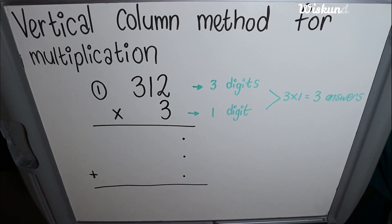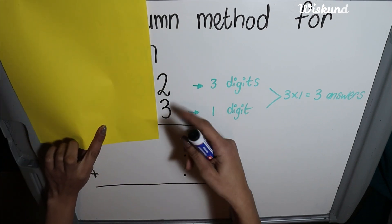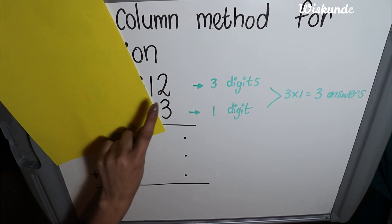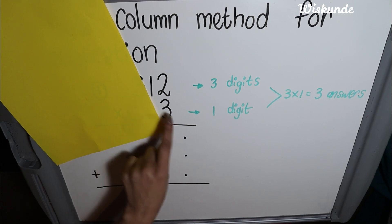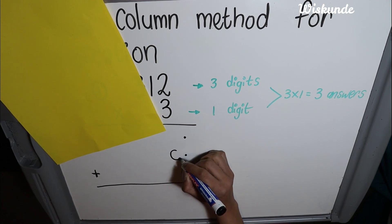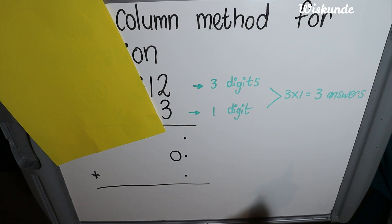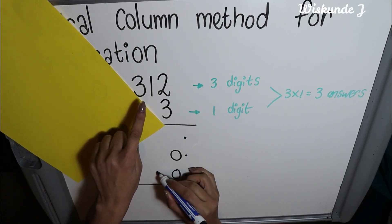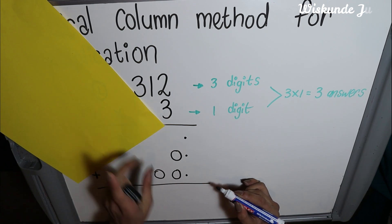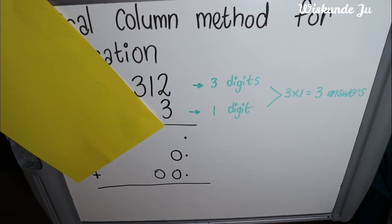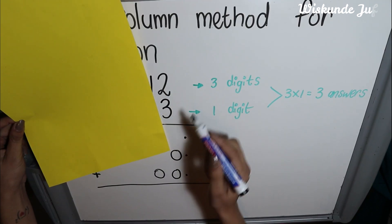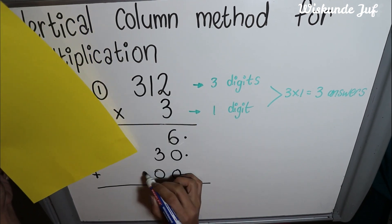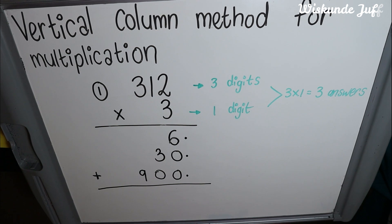First I want to write down all my zeros. So if I have 3 times 2, those are just units I'm multiplying, so my first answer will not have zeros. Then I will multiply 3 times 1 — now this 1 is actually a 10, and therefore I will have one zero there. You can also look at it as that second digit creating the place for the zero. Then I have 3 times 3 — you see those two numbers there — that means I will have two zeros. Note it's actually 3 times 300. Now once I have my zeros placed I can start multiplication. So I will have 3 times 2 which is 6, 3 times 1 which is 3, and 3 times 3 which is 9 — but it actually gives you 900. Do you see how it's easier when you put down the zeros first?